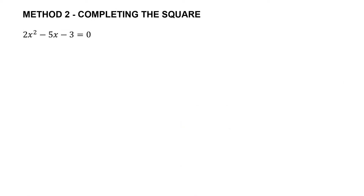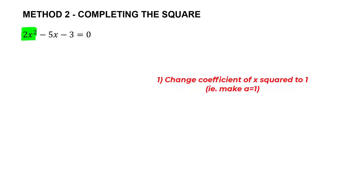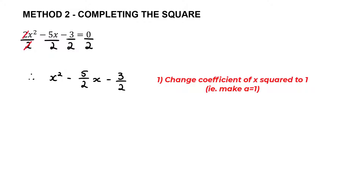Step number one is to make sure the coefficient of x² is 1. We've got 2x², so we need to get rid of that 2. We do that by dividing every term in the equation by 2, so the 2 in front of x² cancels out. After step one we end up with x² − (5/2)x − 3/2 = 0.